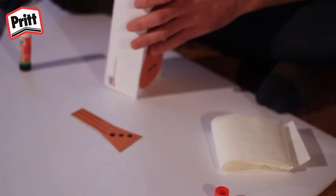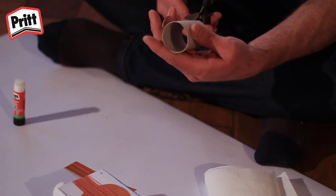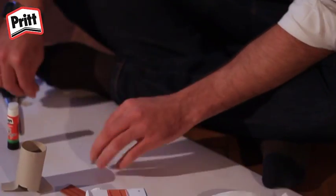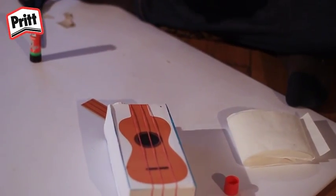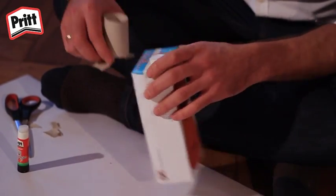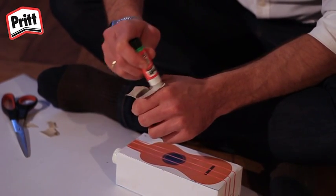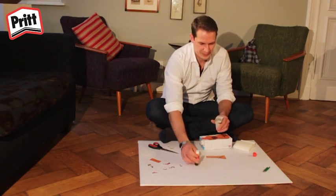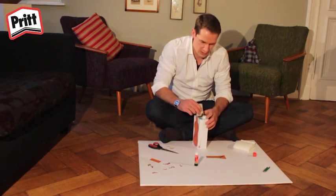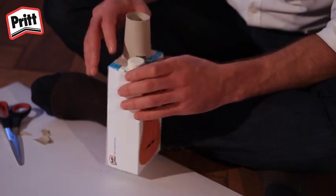Nu gaan we de hals bevestigen. We knippen de toiletrol in, zodat we twee flappen aan de onderkant krijgen, die je op de onderkant van het melkpak kunt lijmen. Smeer veel lijm op de twee flappen die je uit het melkpak hebt geknipt. Om extra steun te geven, trek ik de elastietjes over de flappen van de toiletrol.